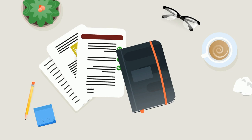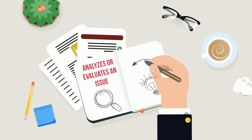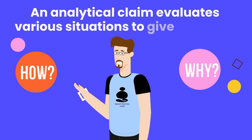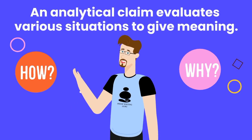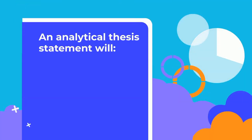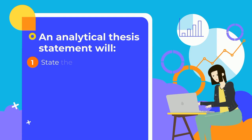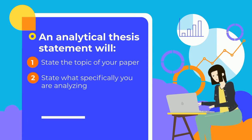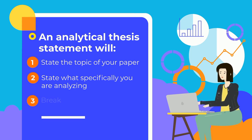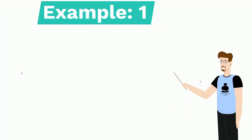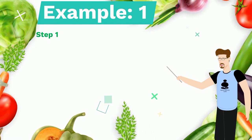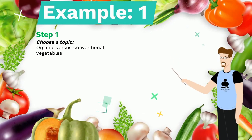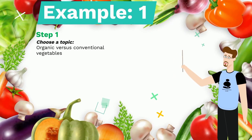C: Analytical thesis statement. An analytical thesis statement analyzes or evaluates an issue and gives meaning to the situation or concept. An analytical thesis statement answers how and why questions. An analytical claim evaluates various situations to give meaning. An analytical thesis statement will: one, state the topic of your paper; two, state what specifically you are analyzing; three, break down the issue into its component parts.